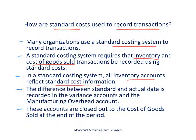The difference between the standard cost and the actual cost is recorded in the variance accounts and also the manufacturing overhead account. At the end of the period, these accounts are closed out to cost of goods sold. We will get into those transactions a few slides down the line.